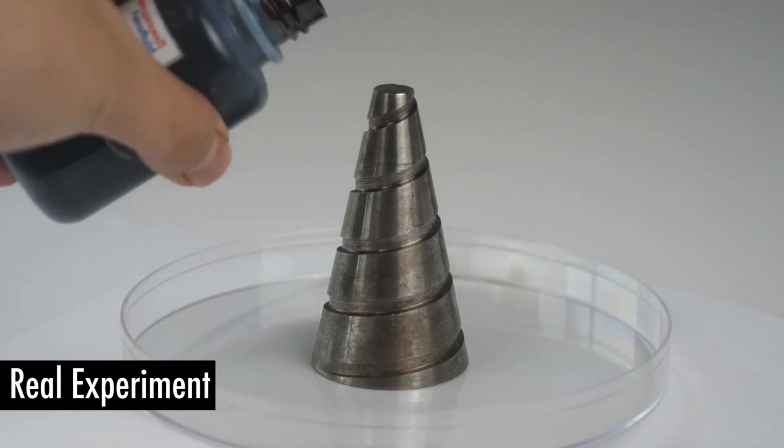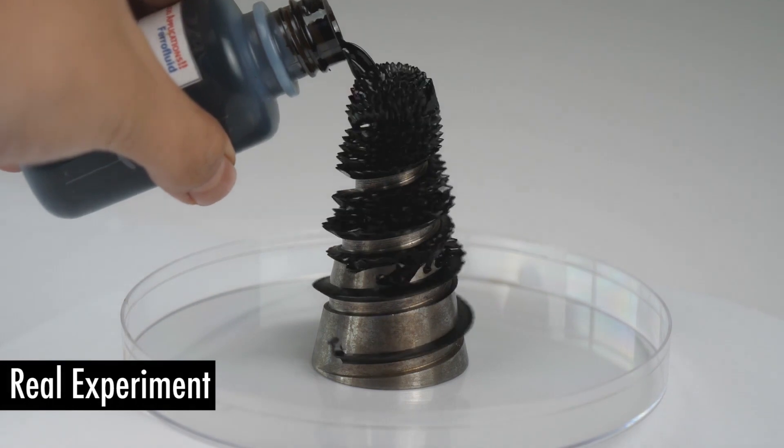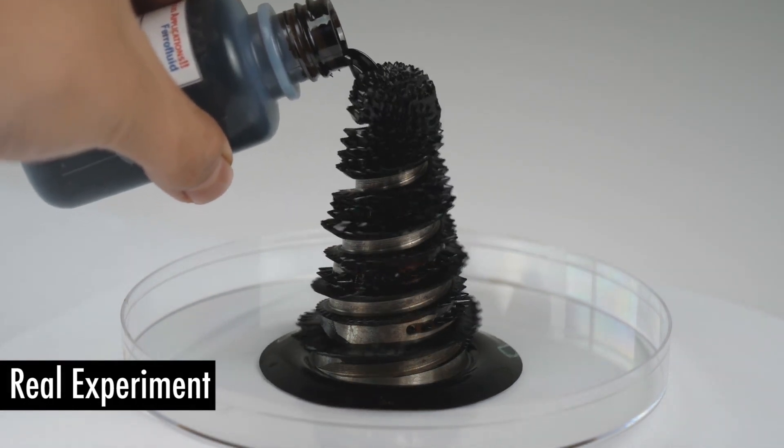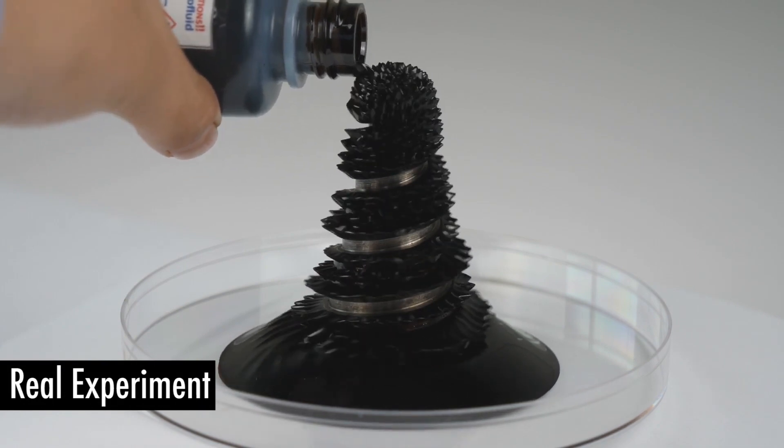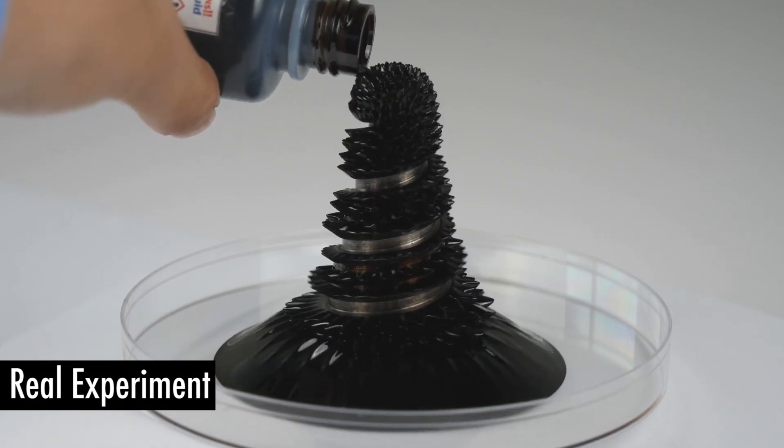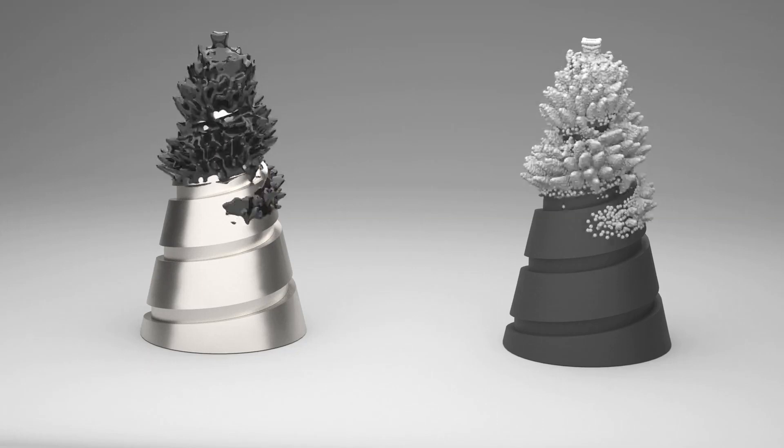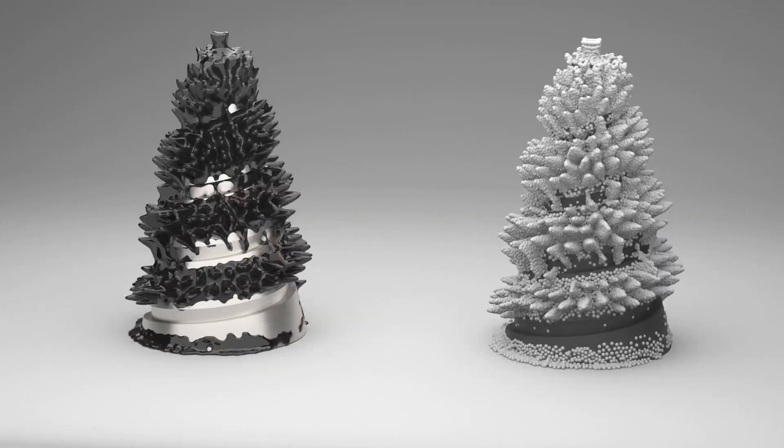In order to allow for a qualitative comparison with complex geometry, we perform a real experiment, in which we pour a ferrofluid down the top of a steel helix placed above a strong electromagnet. Our simulation leads to a visually comparable result.